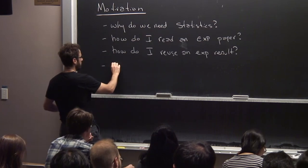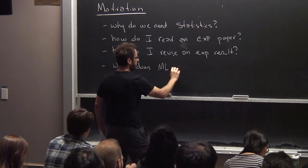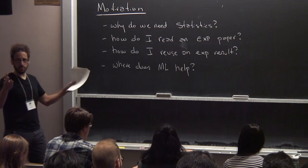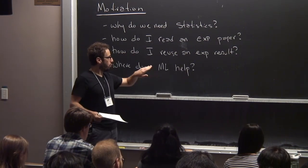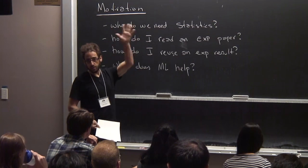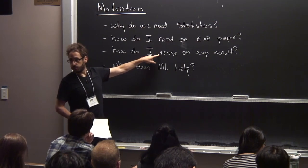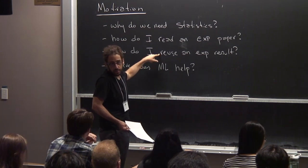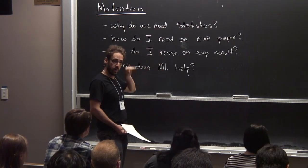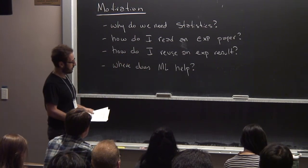The last question is: where does machine learning help? There's a lot of buzz about machine learning these days, and it feels like everybody's just throwing machine learning at every problem. But I want you to understand why we need machine learning in the first place — where it's needed, where it can really help, and what the costs are. For example, if ATLAS does a search using a boosted decision tree that they don't include in the paper, can you reuse that result? Short answer: no. So there are real costs to using machine learning.